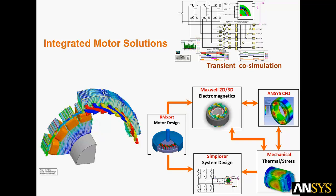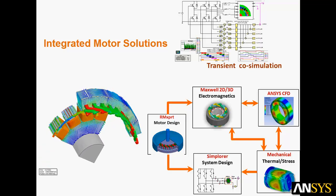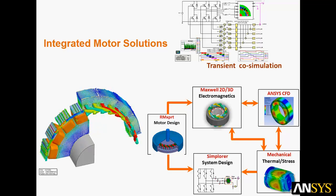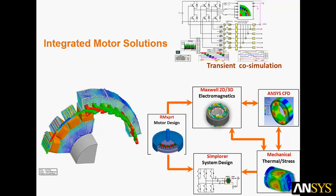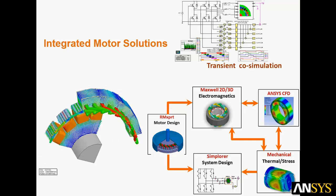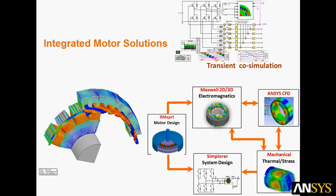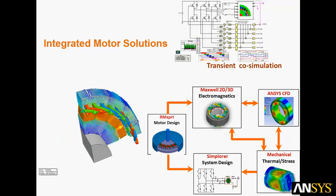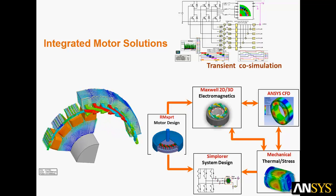ANSYS tools allow you to simulate complete integrated motor behavior by linking physics and systems solutions. RMXpert provides the initial motor design in 2D and 3D models. Maxwell performs 2D and 3D electromagnetics analysis. ANSYS CFD and ANSYS Mechanical are used for thermal and mechanical stress. And Simplorer ties all the physics together in a top-level system for drive circuits and other behavioral components.